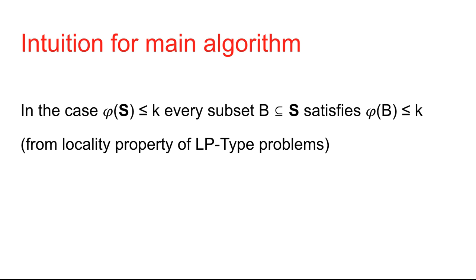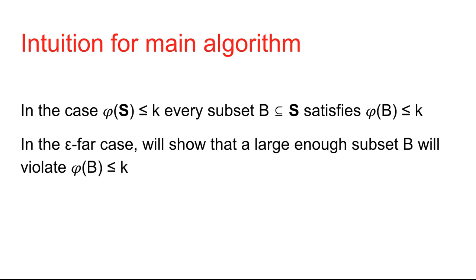The intuition for our main algorithm is the following. In the case that phi of S is at most k (the accept case), every subset of S will satisfy phi of B at most k by the locality property of LP-type problems. Whereas in the epsilon-far case, we need to show that a large subset of B will violate phi of B at most k, and we'll have to show that we can actually find such a subset B.